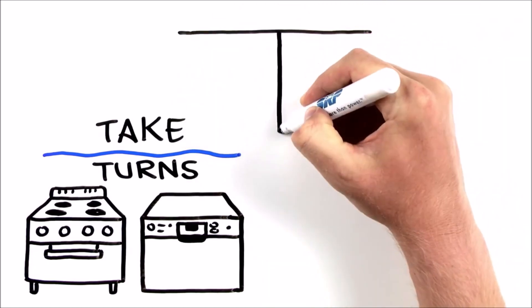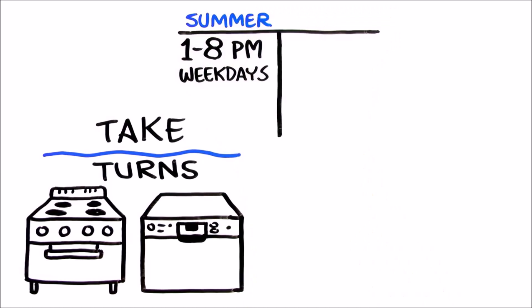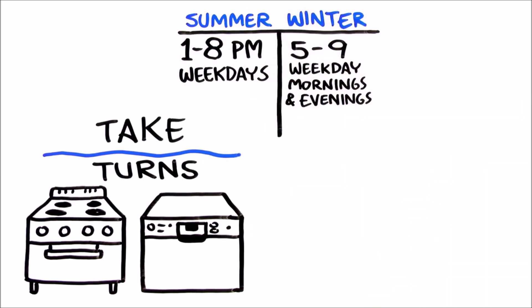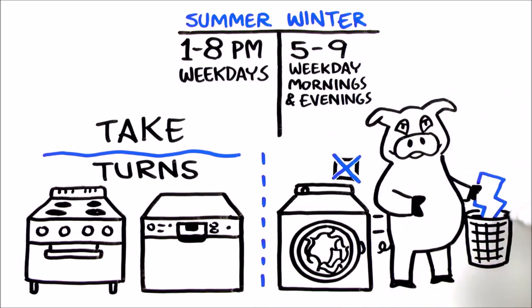And remember, reducing your peak only matters during the plan's on-peak hours – 1 to 8 p.m. weekdays during summer and 5 to 9 weekday mornings and evenings during winter. Those are also times to avoid running electric dryers, which are energy hawks.